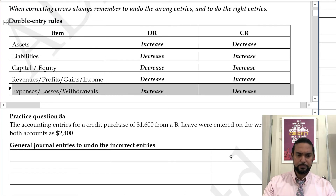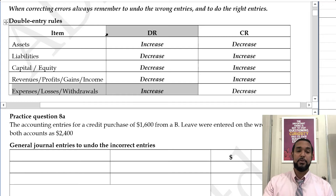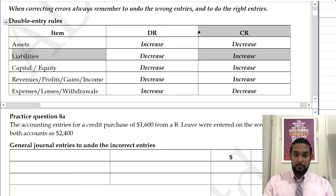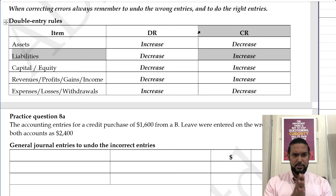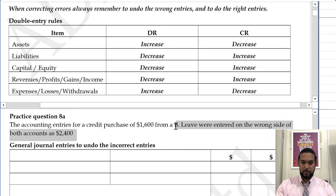So a credit purchase — purchases is an expense. If we're making a purchase, our expense is increasing, which would require a debit to purchases. And if it's a credit purchase, it means you're buying it on credit, which means you owe money for it, which means you are incurring a liability, which itself is increasing, which would require a credit. So we were supposed to debit purchases and credit the creditor, but we didn't. It said it was entered on the wrong side of both accounts — so it means that we debited the creditor and we credited purchases.